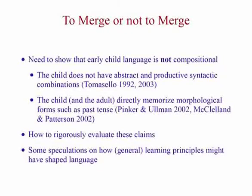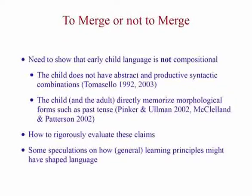This is basically going to be an evaluation of the arguments that there's some discontinuity between early child language and later adult language. That will end up with some speculations on how language learning mechanisms in terms of compositional models can tell us something about acquisition and the evolution of language.